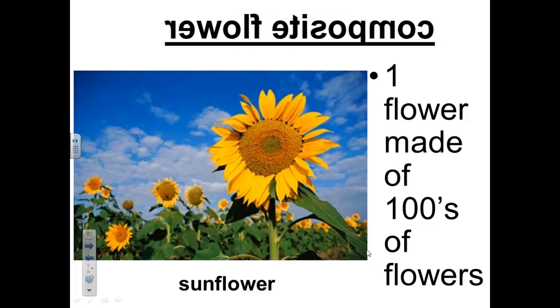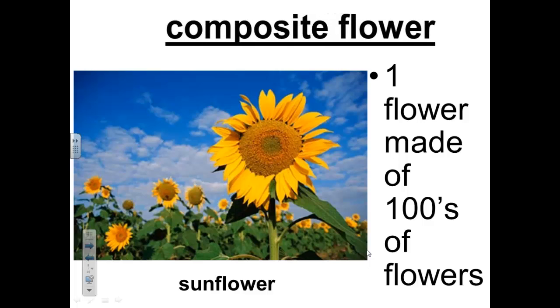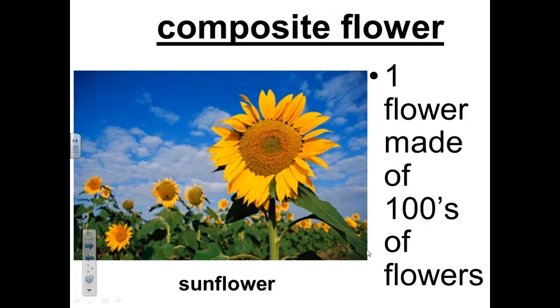Composite flowers. Sunflowers are in the family of composite flowers. At first glance this looks like one big flower, but if you take a closer look, the sunflower is actually made of hundreds of tiny flowers.